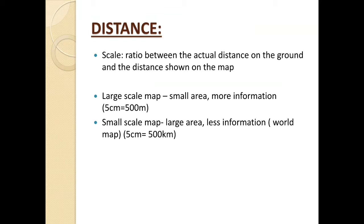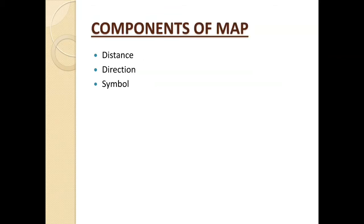If you are representing 1000 meters, you can represent it as 10 centimeters in your map. The ratio between the actual distance on the ground and the distance shown on the map is called scale. From the example, the actual distance is 500 and the distance shown on the map is 5, therefore the scale will be 500 divided by 5, which equals 100.